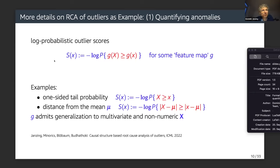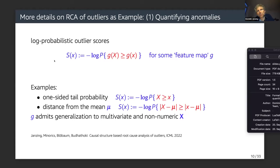Let me implement this for root cause analysis of outliers. First we want to quantify anomalies, and what is convenient is a log-probabilistic outlier score — it measures the minus logarithm of the tail probability after applying some feature map g. This feature map g admits generalization to multivariate and non-numeric variables. Examples include the usual one-sided tail probability of an extreme value, or the distance from the mean.